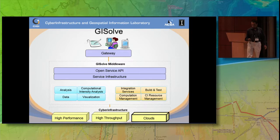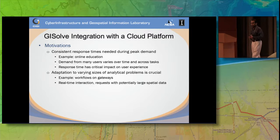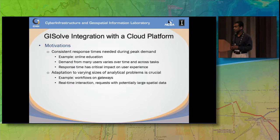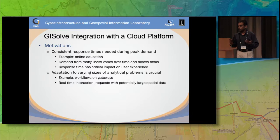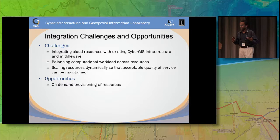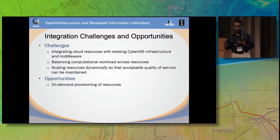The motivation for using cloud resources is to have a consistent response time, especially for gateway users. Sometimes you have a large number of users and a high peak demand — for example, during online education — and when there are hundreds of users, invariably some will see a slow response. We want to get over that and be able to handle problems of different sizes. A couple of challenges we encountered were integrating the existing middleware, which was developed mainly for HPC and high throughput computing, but cloud represents a different model — so we had to address those changes.